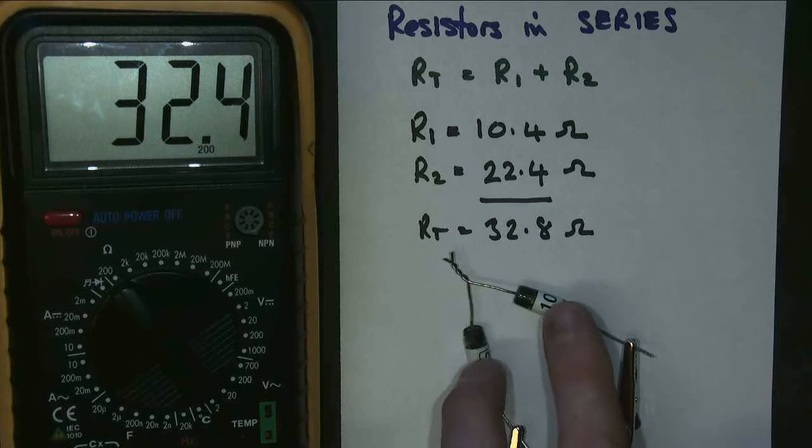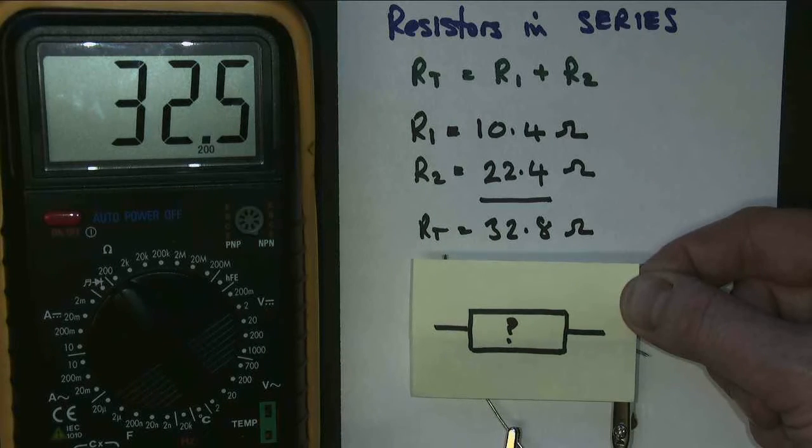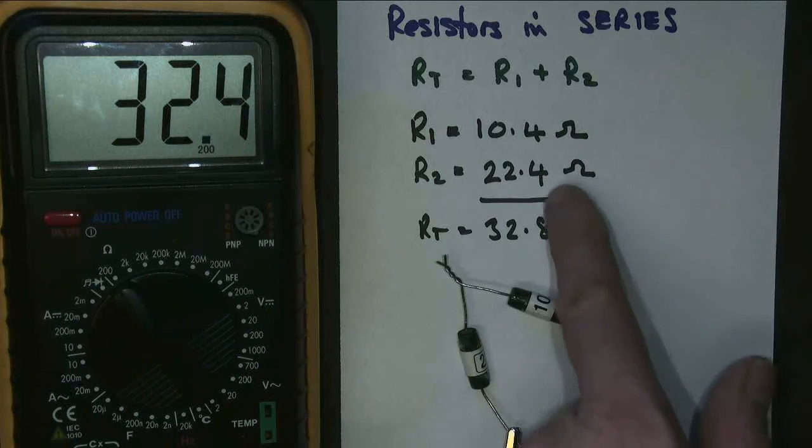Ta-da! So two resistors act like one resistor as far as the circuit's concerned. And the total of that one resistor is the two resistors added up.